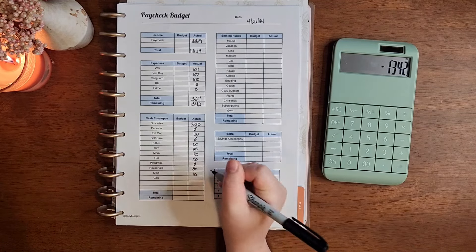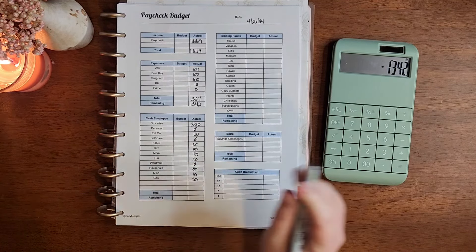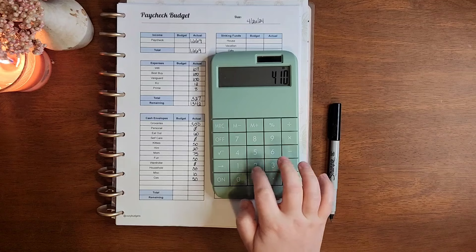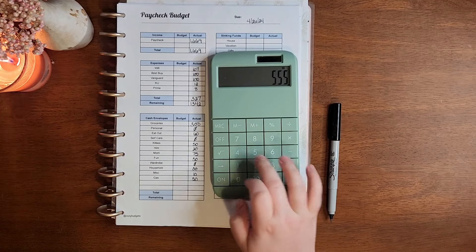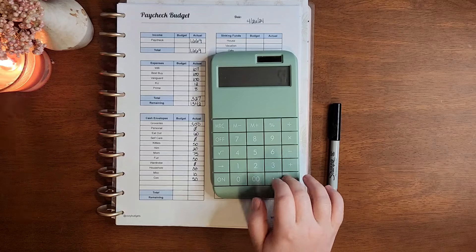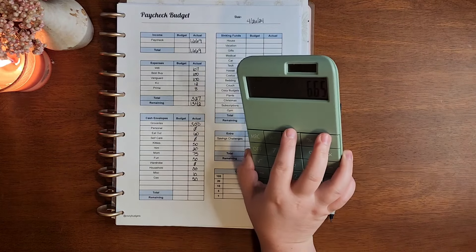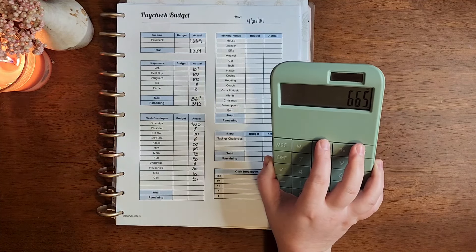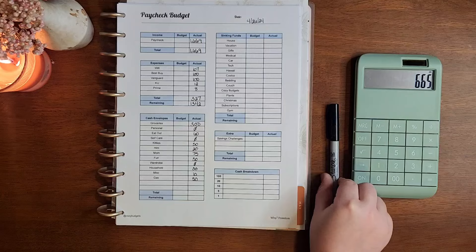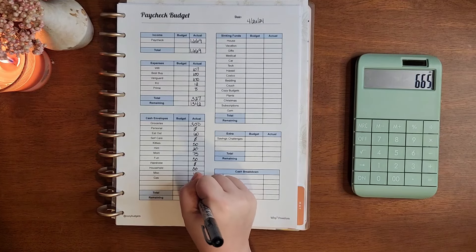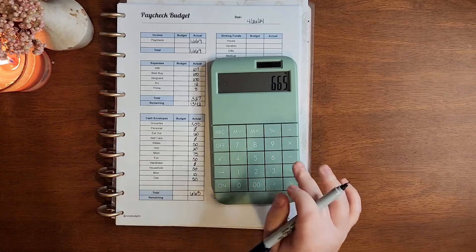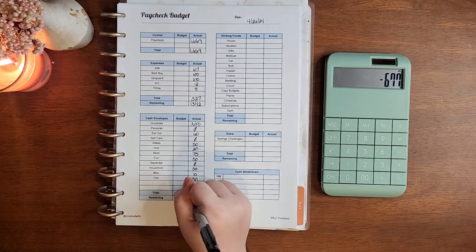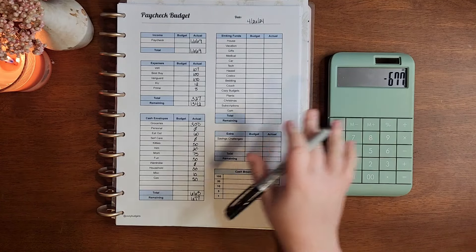Miscellaneous is going to get $10 and gas is going to get $50. So this comes to $665. Is that right? Yes, that is right. Okay. And then if we take $665 from $1342, that gives us $677.